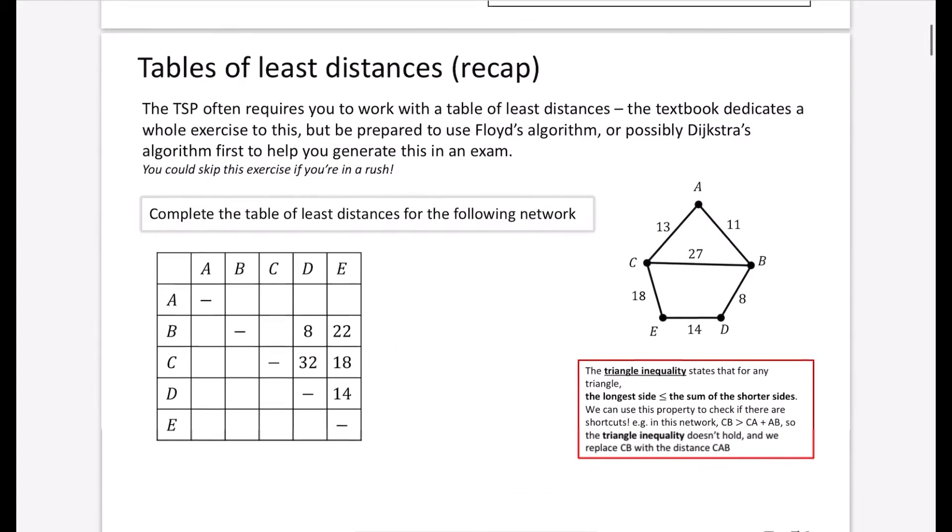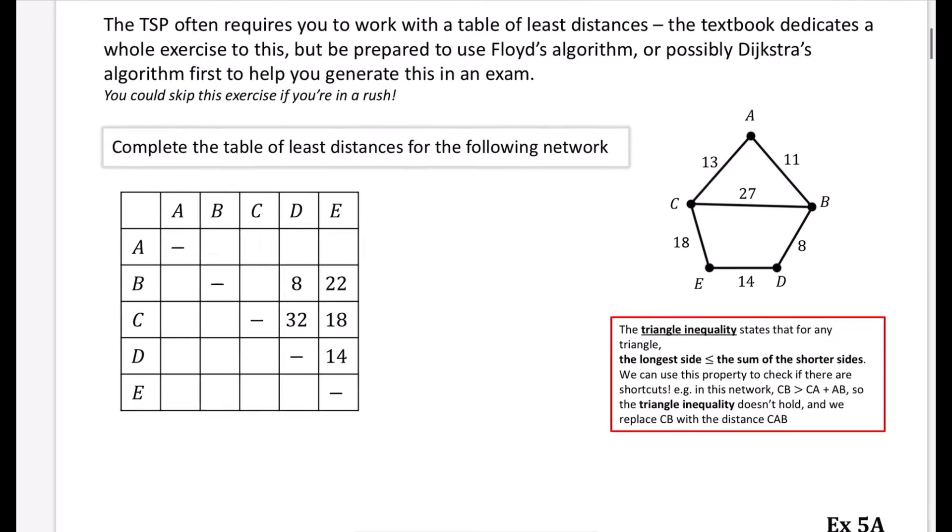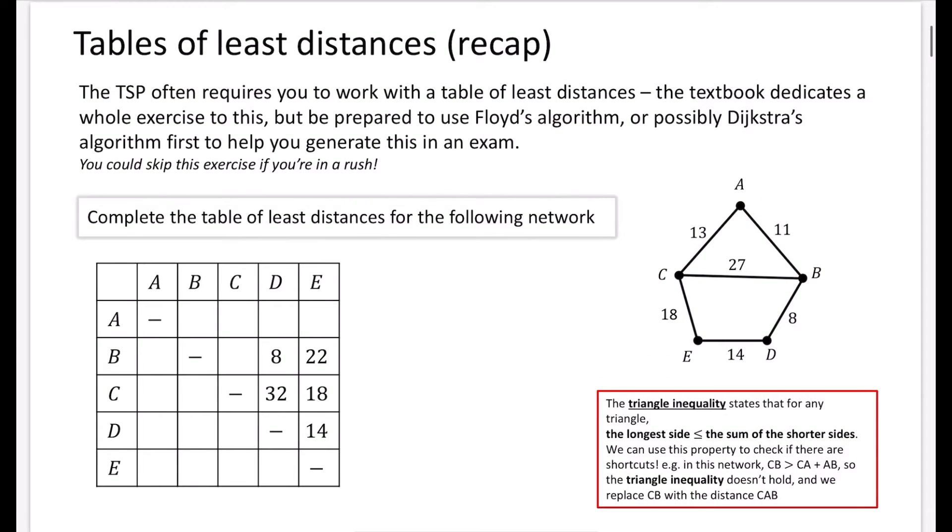So we're going to kick off with some stuff about the tables of least distances, which is a recap. The traveling salesman problem often requires you to work with a table of least distances. The textbook dedicates a whole exercise to this. But just be prepared to use Floyd's algorithm or possibly Dijkstra's algorithm first to help you generate this in an exam. And you could skip this exercise if you're in a rush because it's pretty straightforward. So what we're going to do is complete the table of least distances for this network that we've got over here.